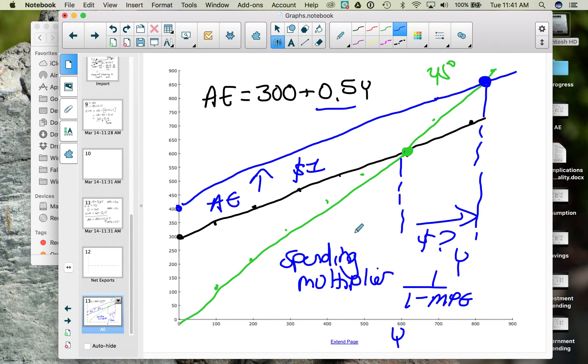So we can take 1 divided by 1 minus 0.5, and we end up with 1 divided by 0.5, and we end up with the spending multiplier of 2. So what this tells us is, if we increase aggregate expenditures by $1, national income will increase by 2 times that.